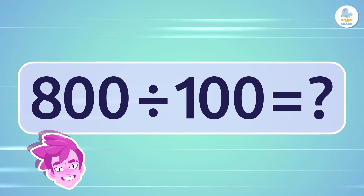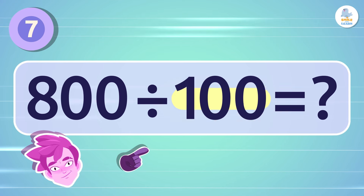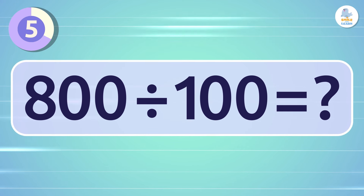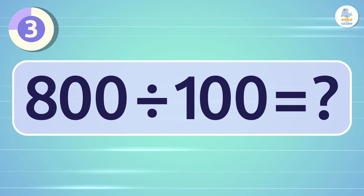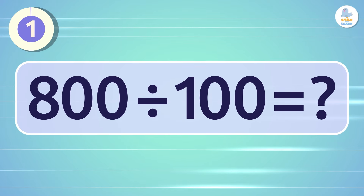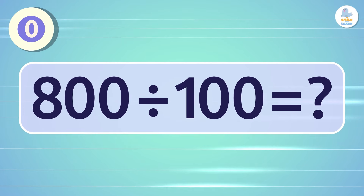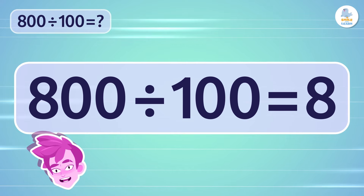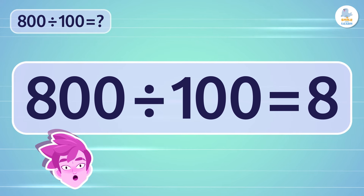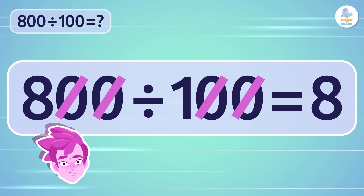What is 800 divided by 100? Exactly — it's 8! As we have seen before, first we remove the two zeros in each number, and then we divide 8 by 1, which is 8.